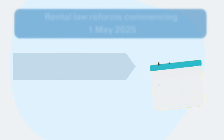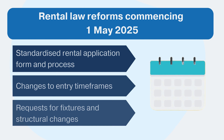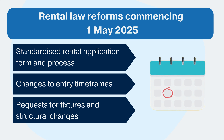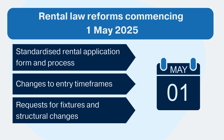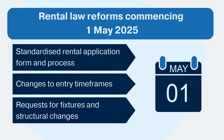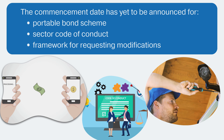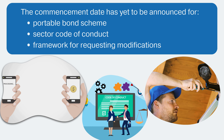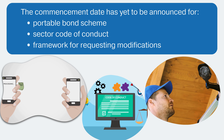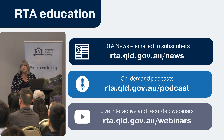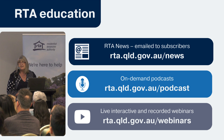Other remaining rental reforms, including a new standardised tenancy application form, changes to entry timeframes and requests for fixtures and structural changes, will commence on 1 May 2025 under Part 2 of Proclamation. The Queensland Government is yet to announce commencement dates for reforms regarding a portable bond scheme, sector code of conduct and a framework for requesting modifications. Once we know more, the RTA will inform the sector.